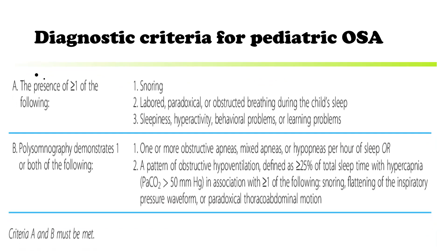There are diagnostic criteria for pediatric OSA: Criteria A and B, both of which must be present. Criteria A is the presence of one or more of the following: snoring, labored paradoxical or obstructed breathing during sleep, sleepiness, hyperactivity, behavioral problems, or learning problems. Criteria B is polysomnography demonstrating characteristics of OSA. Both criteria A and B must be met to diagnose OSA in pediatrics.